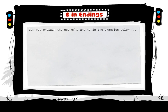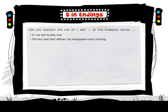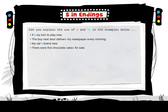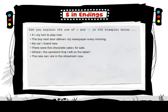Can you explain the use of S and apostrophe S in the examples below? It's my turn to play now. The boy next door delivers my newspaper every morning. My car's brand new. There were five chocolate cakes for sale. Where's the sandwich that I left on the table? The new cars are in the showroom now.